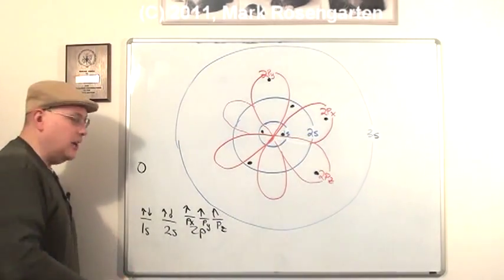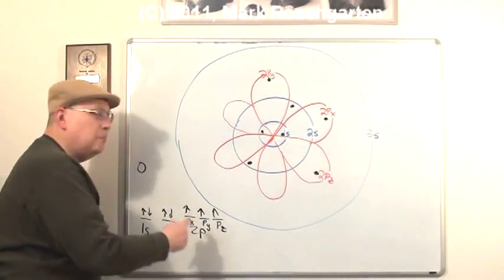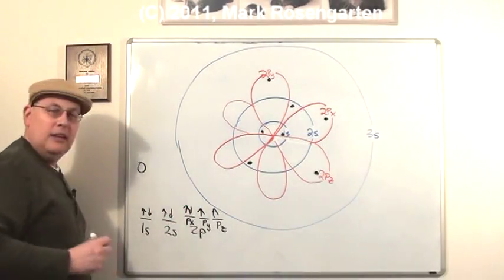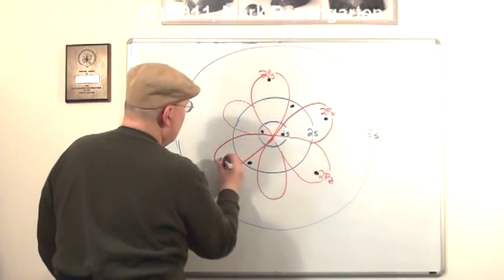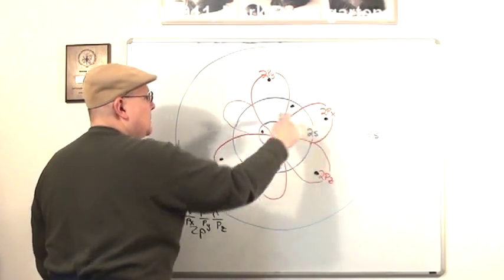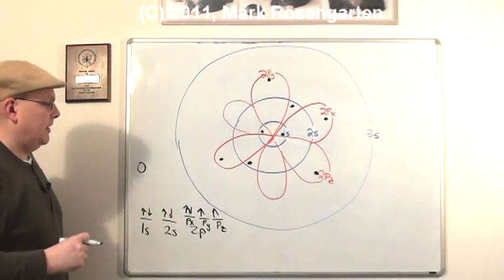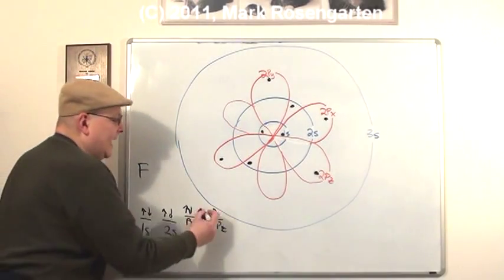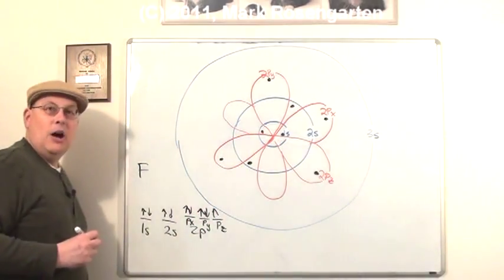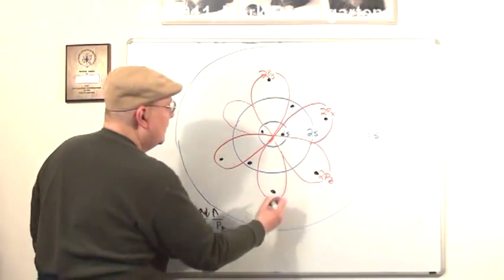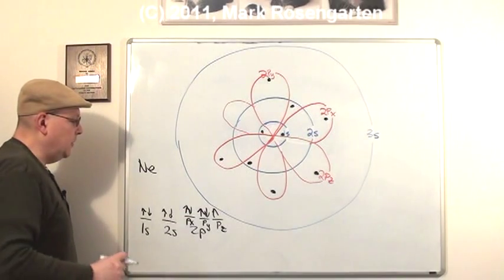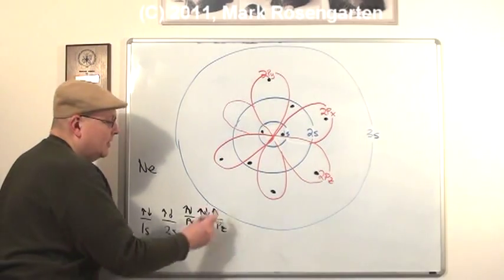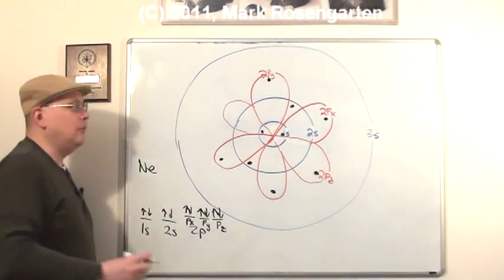Oxygen has a configuration 1s², 2s², 2p⁴. So where does that fourth electron go? Back in the px orbital, like that. And again, one's got the upspin, the other's got the downspin. Fluorine has the configuration 1s², 2s², 2p⁵. Py gets the next electron. Like that. Neon has the configuration 1s², 2s², 2p⁶, where the p sub level is now filled up.